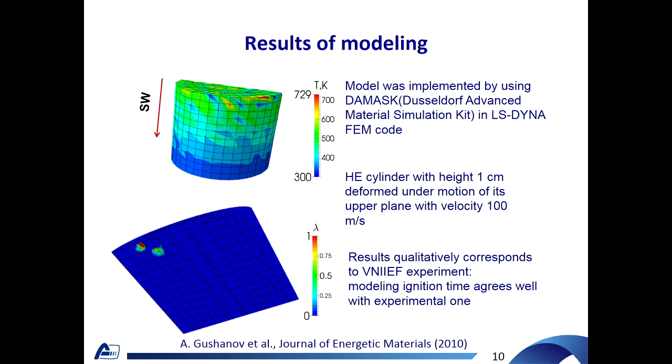This model was implemented by using Düsseldorf Advanced Material Simulation Kit in LS-Dyna finite element code. And we simulated test experiment. HMX cylinder deformed under motion of its upper plane, which with some extent corresponds to experiment carried out in Russian Research Institute of Experimental Physics in Sarov. And the simulation result corresponds to experimental data. Here the temperature field and burn rate field are shown at 4 microseconds after applying upper plane motion.